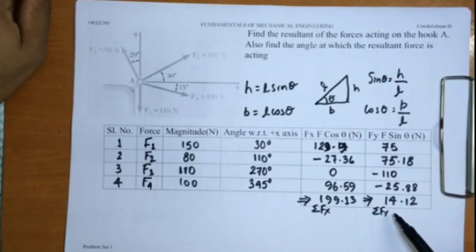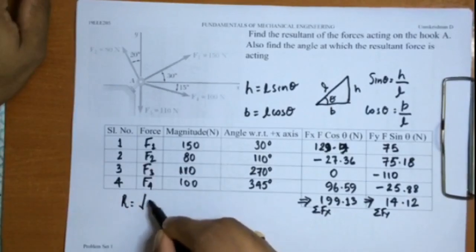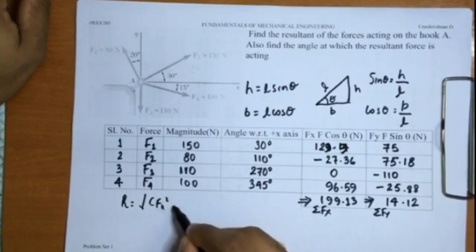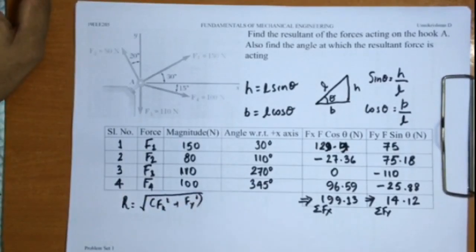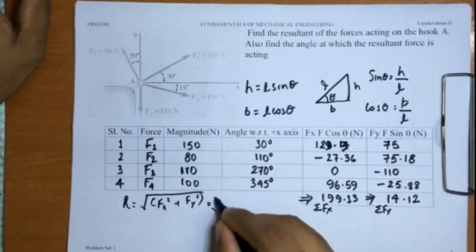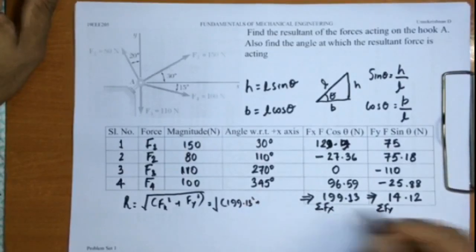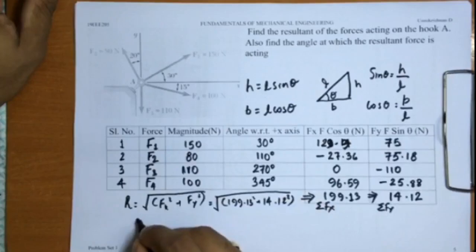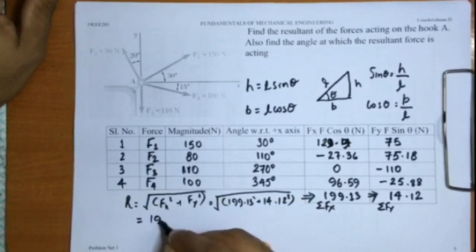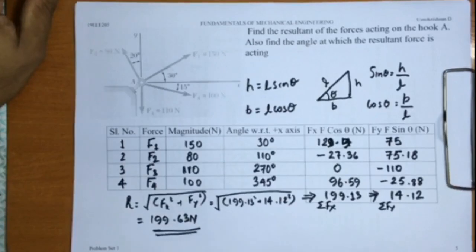Now it is asked to find the resultant of these forces. The resultant of these forces R is equal to square root of Fx squared plus Fy squared, which turns out to be square root of 199.13 squared plus 14.12 squared, which turns out to be 199.63 newtons. This is your final resultant force.